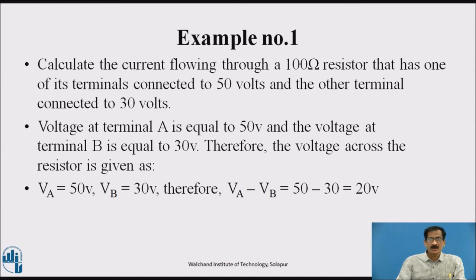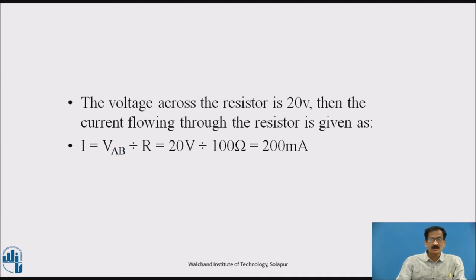Example 1: Calculate the current flowing through a 100 ohm resistor that has one terminal connected to 50 volts and the other terminal connected to 30 volts. Voltage at terminal A is 50 volts, at B it is 30 volts, so the voltage across the resistance will be 50 minus 30, that is 20 volts. The current flowing through the resistor is I = V/R = VAB divided by 100 ohm = 20 divided by 100 = 0.2 ampere, that is 200 milliampere.